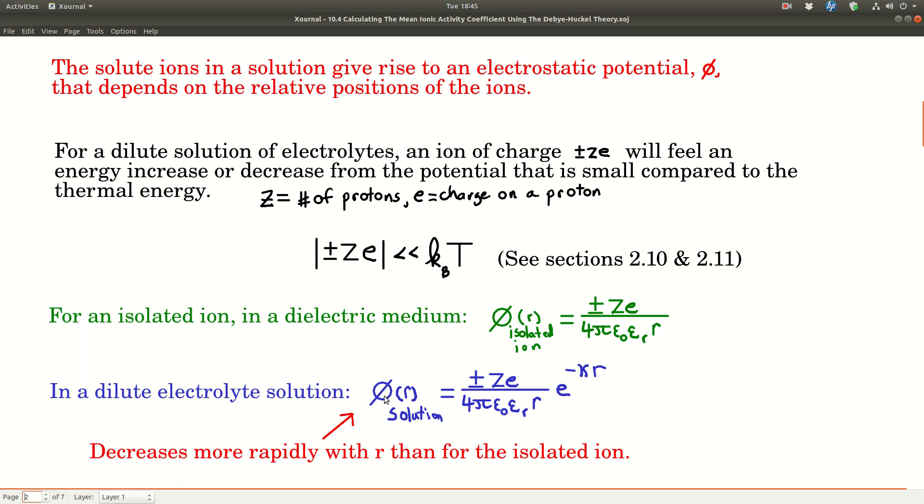In a dilute electrolyte solution, you can do the same calculation where we take into account the interaction between the ions. We're still ignoring the solvent, but we're taking into account other ions. The electrostatic potential for the solution is equal to the same term in front, times this exponential factor, e to the minus kappa r. I'll show you kappa in just a minute.